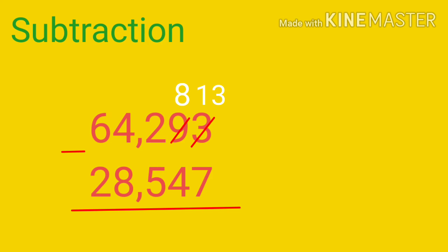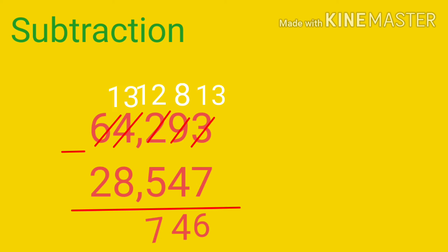Now here remains 8. Borrow one — it becomes 12 minus 5 equal to 7. On the thousands place, remain 3, so borrow one: 13 minus 8 equal to 5. Here 5 minus 2 equal to 3. The answer is 35746.